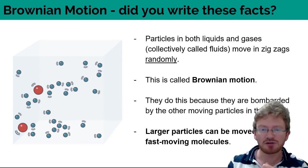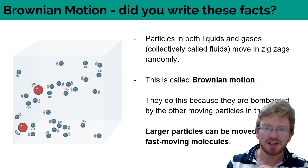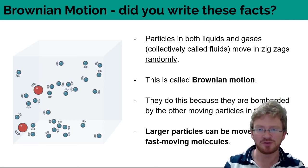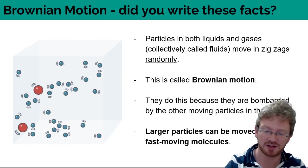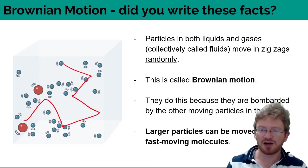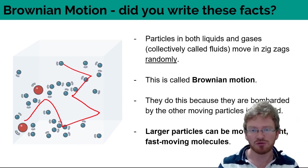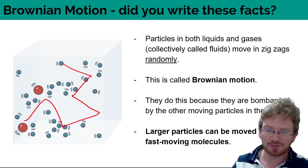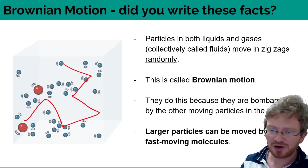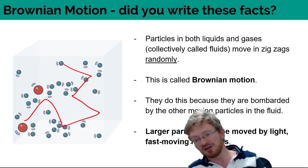So there are a couple of ways of explaining this. The basic idea is that particles in liquids and gases - remember we call liquids and gases fluids - they move in zigzags randomly. So I've got one particle here that will go over here, then over here, then over here. And we call that Brownian motion. Now why do they move around randomly? They do that because they're constantly being bombarded by other particles in the fluid.